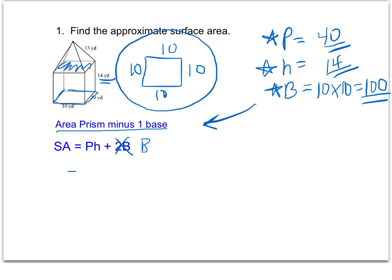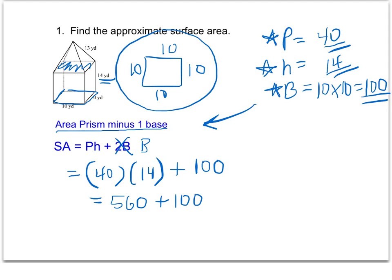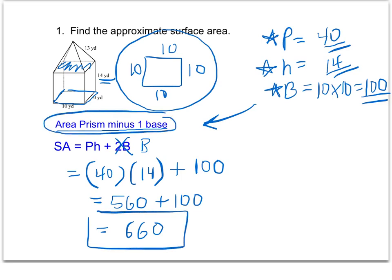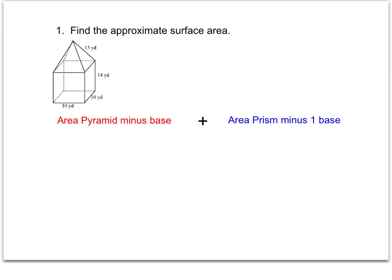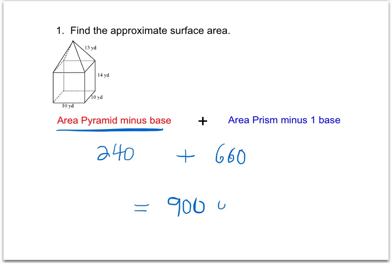Plugging those values into the formula: perimeter times height plus 1B gives 40 times 14 plus 100. 40 times 14 is 560, and adding 100 gives 660 — that's the area of the prism with one base subtracted out. For the final step, I add the two results together: 240 square yards from the pyramid plus 660 from the prism gives a final answer of 900 square yards.